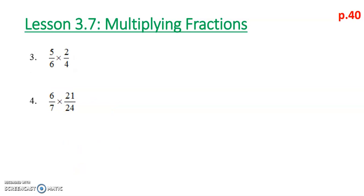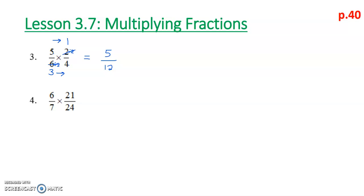For number 3, we look to cross-cancel. 5 and 4 have nothing to cancel. But 6 and 2 are both divisible by 2: 2 divided by 2 is 1, and 6 divided by 2 is 3. You can simply cross out instead of showing the division. Then multiply: 5 times 1 is 5, and 3 times 4 is 12. Be careful when you cross-cancel to clearly show yourself the new numbers for numerator and denominator.